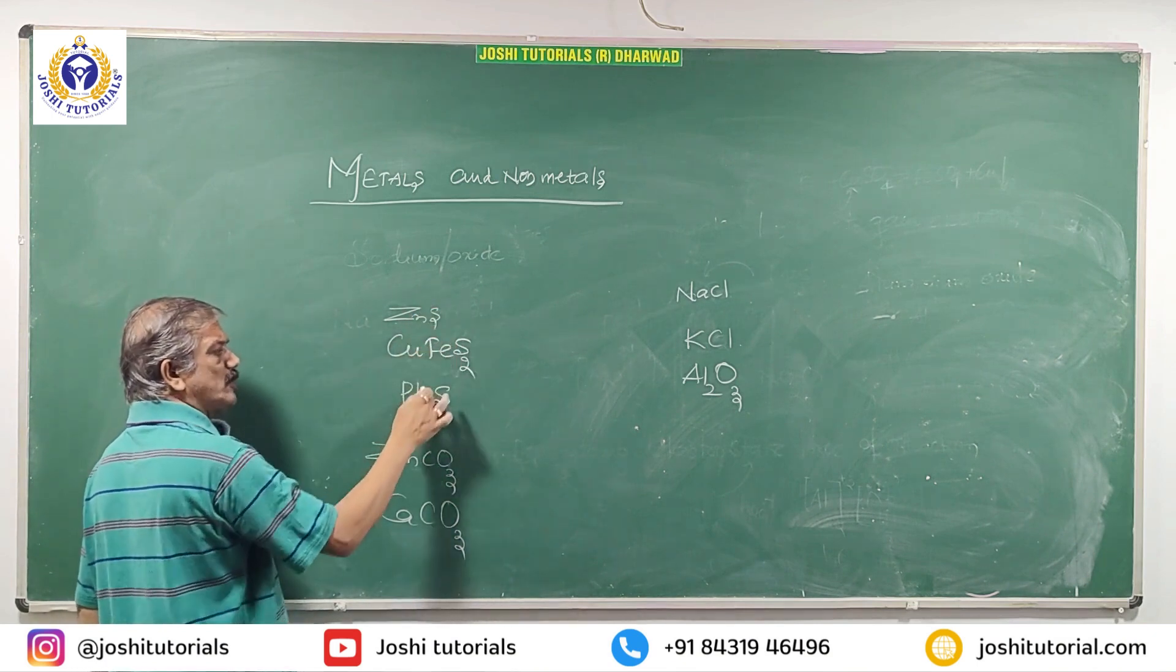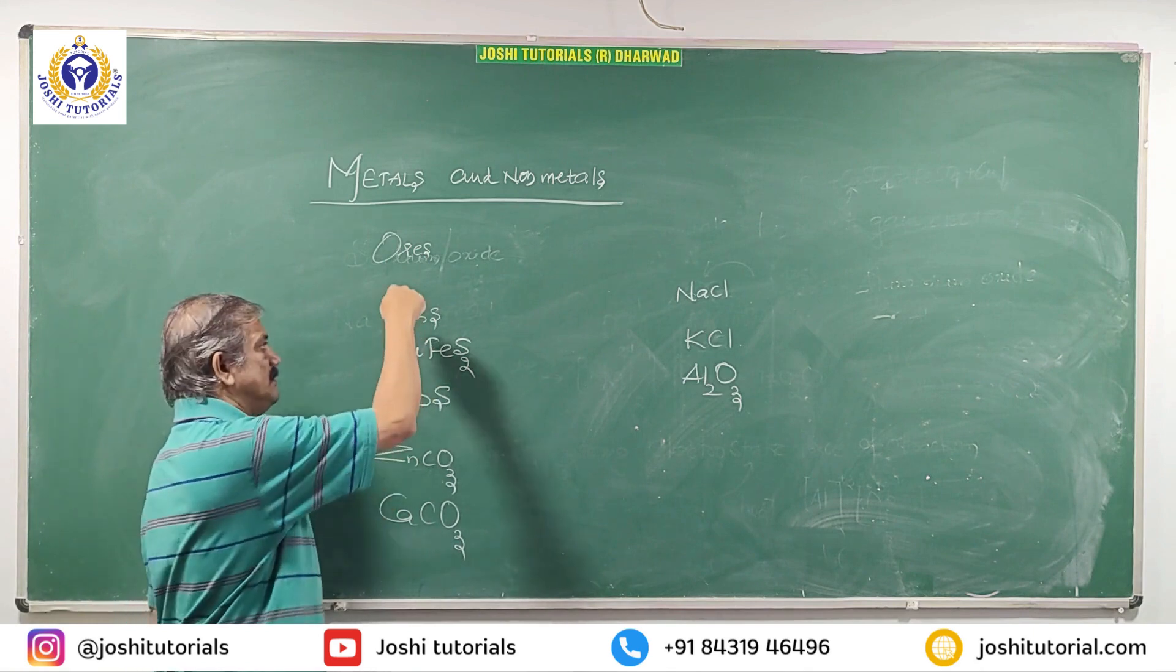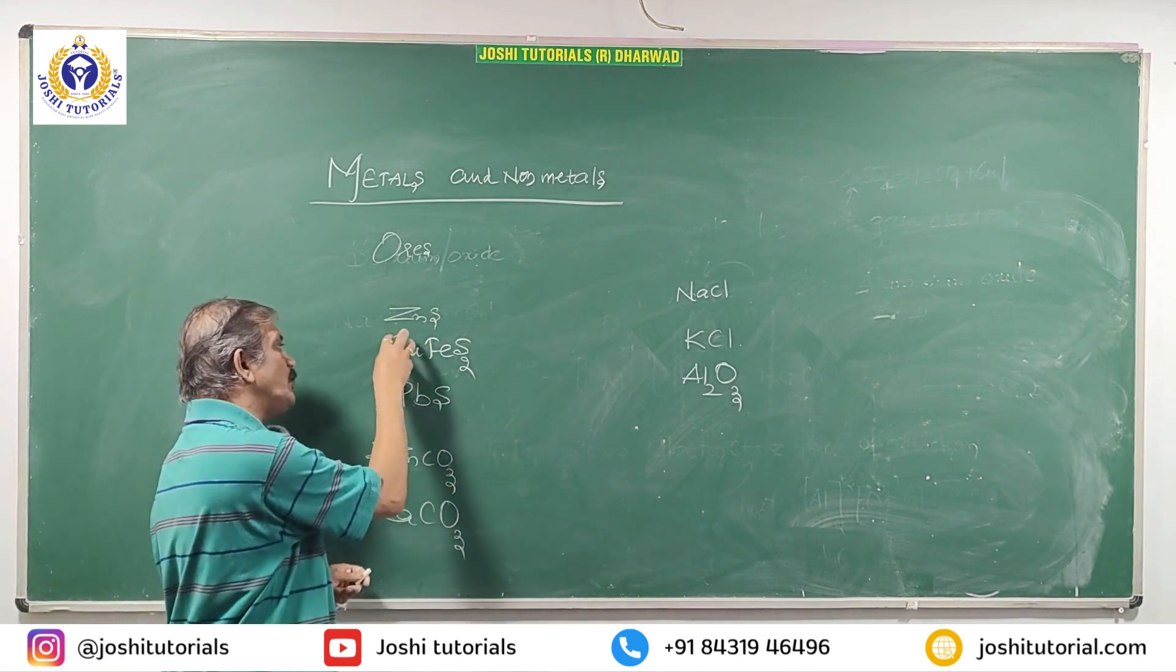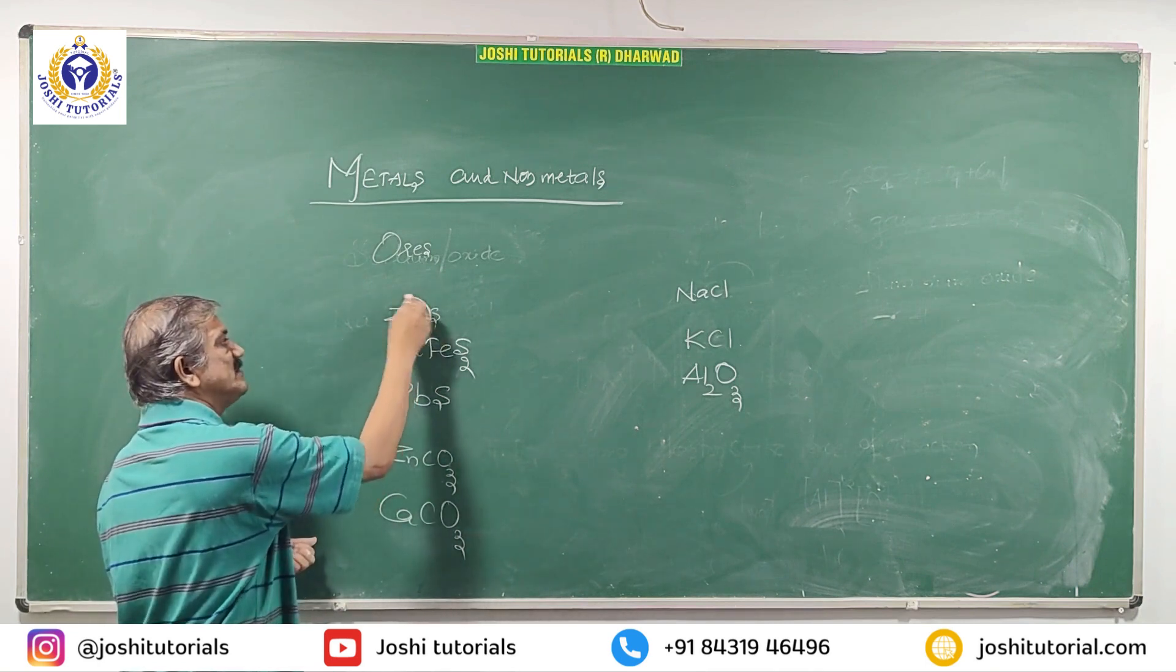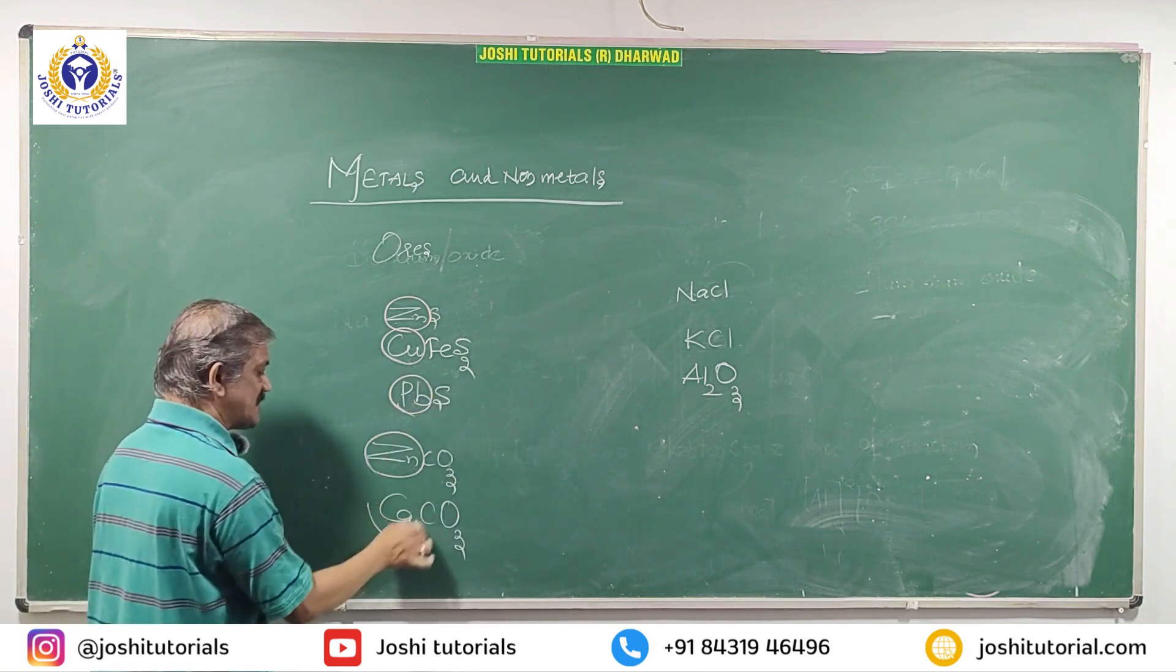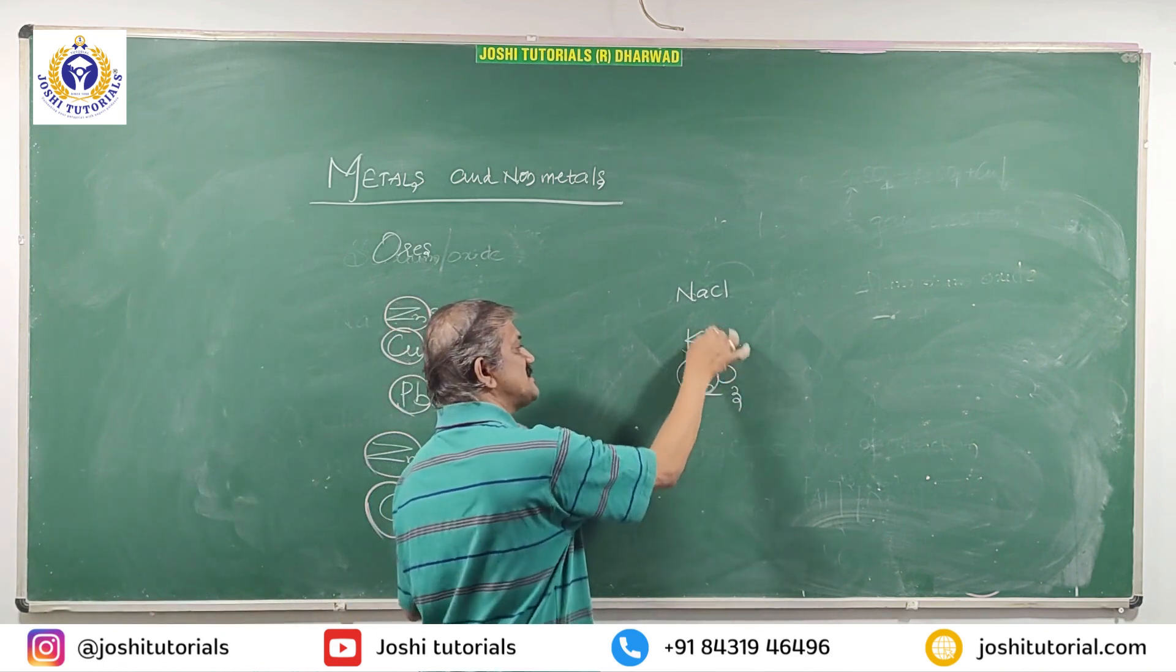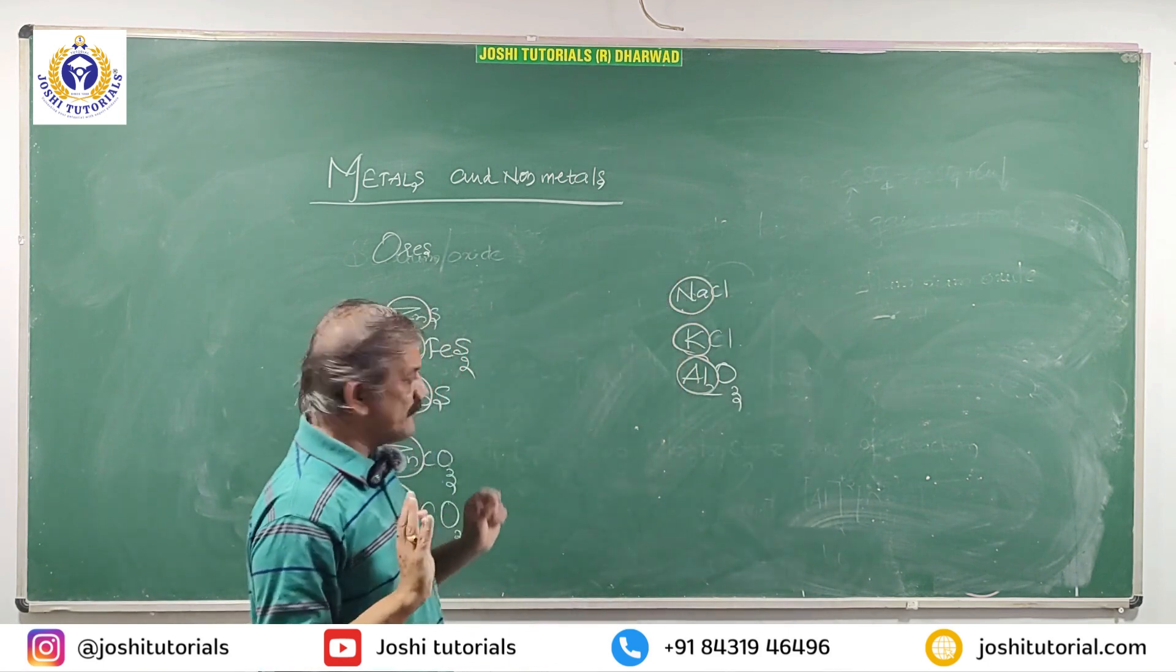These are called ores, means these are available naturally in the crust from which we extract metals. Like we extract zinc, copper, lead, calcium, aluminum, potassium, sodium. Few examples I have taken.